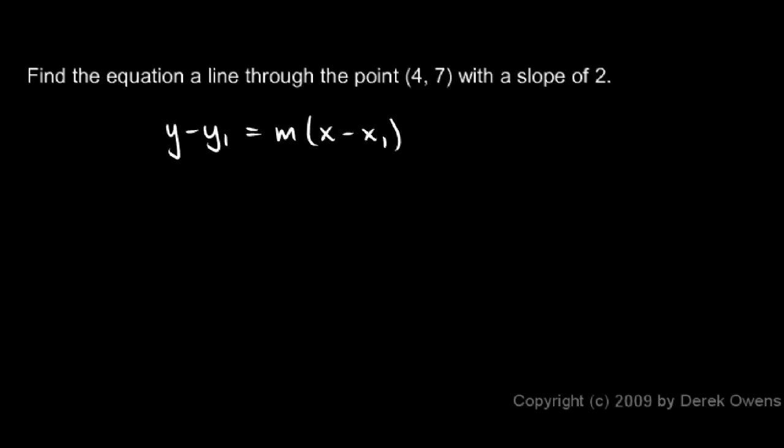So let's write the equation with all those numbers in there. y minus y1, that's our 7, is equal to the slope m, that's 2, times x minus x1. And x1 is 4, our x coordinate. And that's it. That's the equation of the line and it's written there in point-slope form.